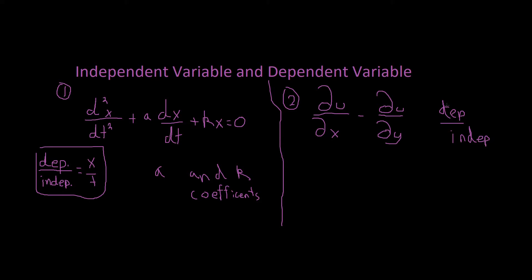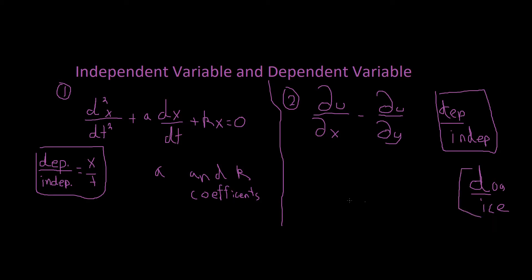This leads to my second tip for identifying dependent and independent variables. We start by saying 'D-I' as a mnemonic — it stands for Dependent, Independent. You can come up with something clever like 'dog ice' or 'ice dog,' or just say dependent independent, or just say D-I. That's how I remember it — pick whatever is clever for you.